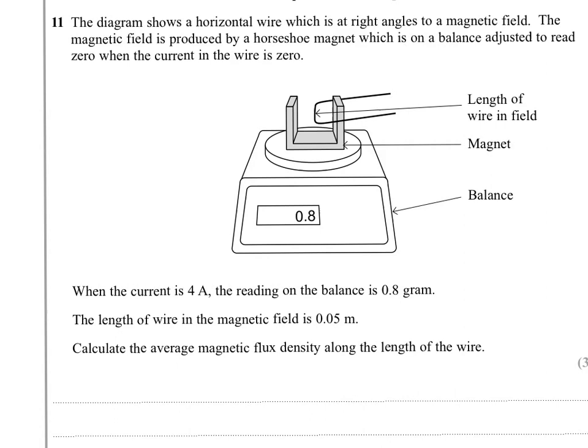When the current is 4 amps, the reading on the balance is 0.8 grams. The length of the wire in the magnetic field is 0.05 meters. Calculate the average magnetic flux density along the length of the wire.